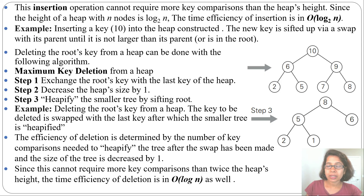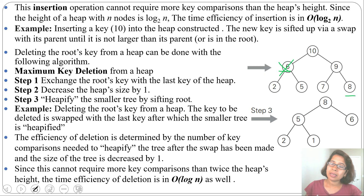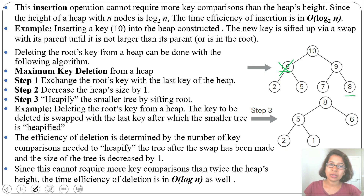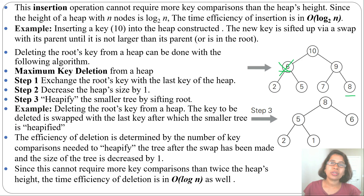Heap sort is based on maximum key deletion. If you want to delete any particular node — suppose you want to delete 6 — you simply swap 6 with the last node, delete the last node, decrease the heap size, and then heapify.